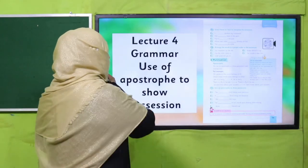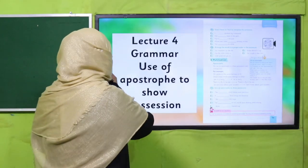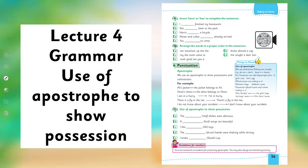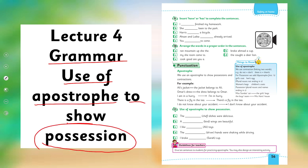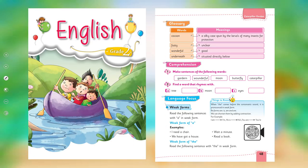My dear students, today under the title of grammar — the formal and lexical aspect of language — we are going to learn the use of apostrophe to show possession. Before this, in English for Grade 2, you have learnt about weak forms. Remember how do we pronounce weak forms and how do we write weak forms?